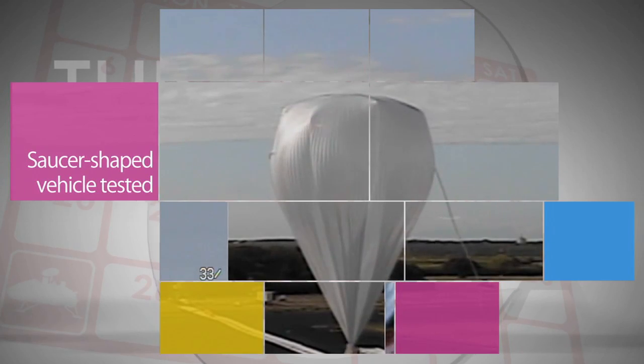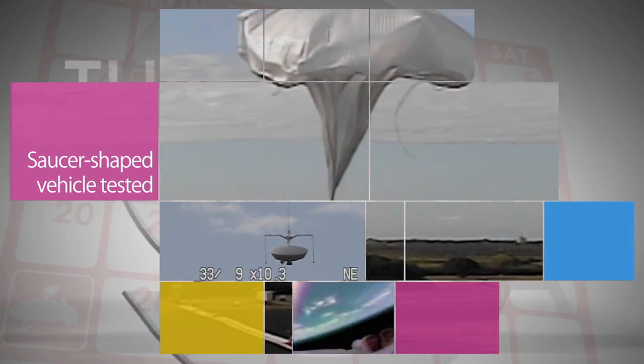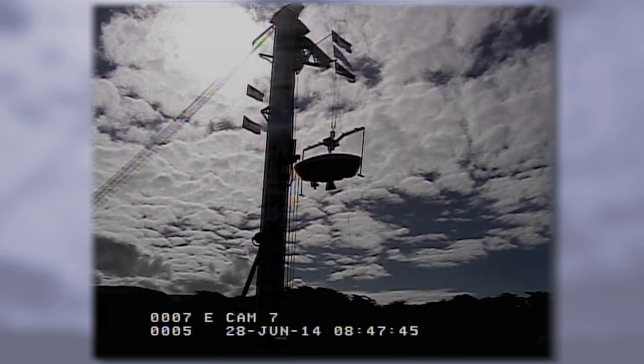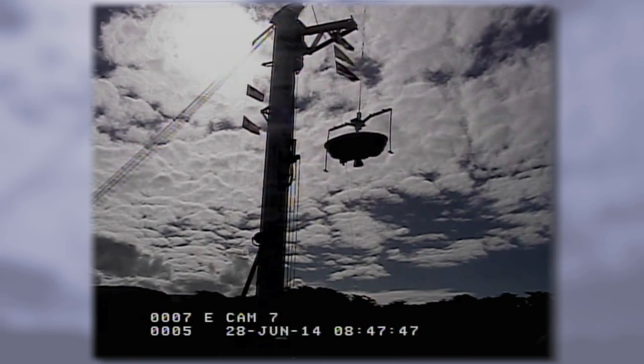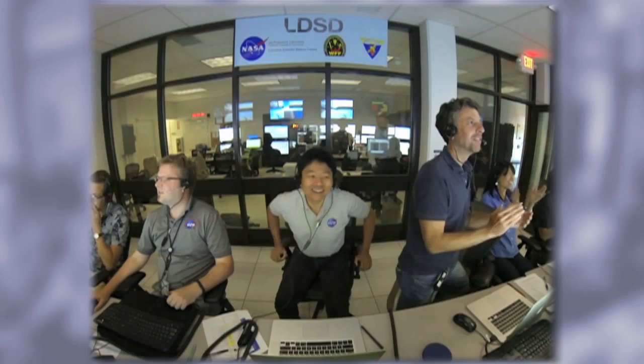NASA's saucer-shaped low-density supersonic decelerator took its first engineering test flight, reaching Mach speeds high above the Navy's Pacific Missile Range facility on Kauai, Hawaii. This first test of three planned for LDSD evaluated the flying ability of the vehicle.